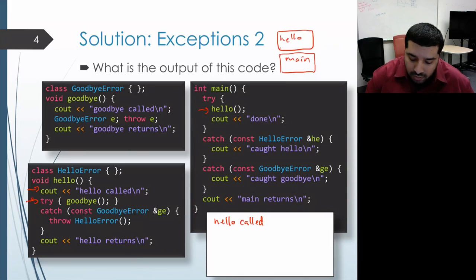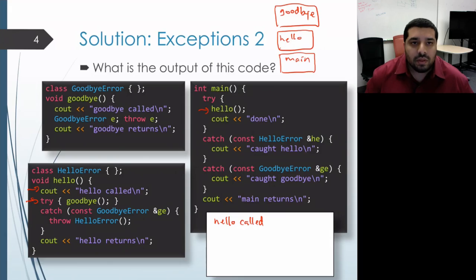And within that try block, we have a call to the goodbye function. So we get an activation record for goodbye on our call stack. And then execution proceeds to the body of that goodbye function, which prints out goodbye called. And then we follow that up with constructing and throwing a goodbye error object.